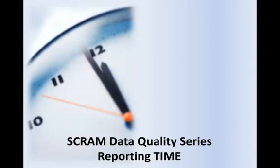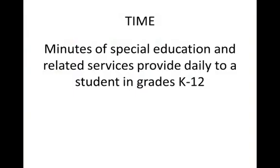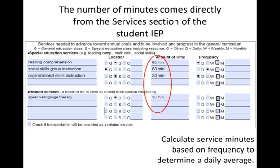In this video, we will discuss the requirements and expectations for reporting in the Time category. Time is a report of the number of minutes of special education and related services provided daily to a student in grades K through 12, including students up to age 22. Time is not reported for students enrolled in preschool programs. When reporting time, the information you need comes directly from the services page of the student's Individualized Education Program, or IEP.